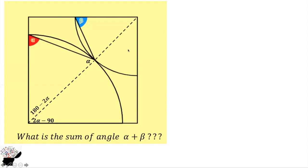We also draw a line here. This is the radius and this is also the radius of the smaller quarter circle. Again it forms an isosceles triangle. So if this side is beta, this side will also be beta, and this angle here will be 180 minus 2 beta.